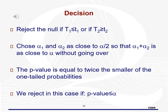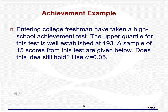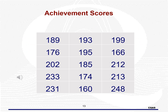For the example, entering college freshmen have taken a high school achievement test. The upper quartile for this test is well established at 193. A sample of 15 scores from this test are given. Does this idea still hold? Use alpha equals 0.05. The upper quartile means the 75th percentile. Based on the statement in the problem, we assume the test is two-tailed since they want to know if the 75th percentile being 193 still holds. Notice that we do have one value that is 193, meaning T1 does not equal T2.